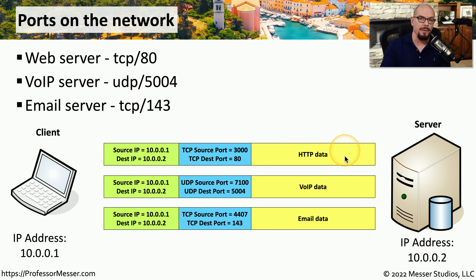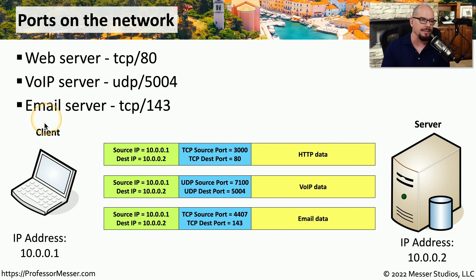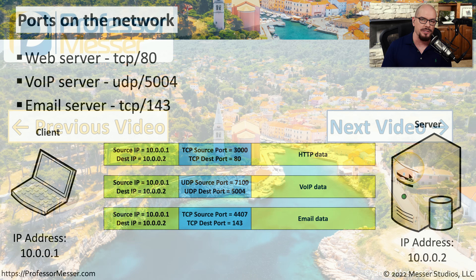At the same time, this client wants to communicate to the server using voice over IP. UDP is used because VoIP traffic uses UDP, with destination port 5004 as the well-known port for this VoIP server, and a random source port of 7100. For the third simultaneous conversation — email — the destination port is TCP port 143, and this client picked a random source port of TCP port 4407. You can see we're sending a lot of information simultaneously, but because we're using IP addresses and port numbers, the server knows exactly where this traffic goes once it's received.